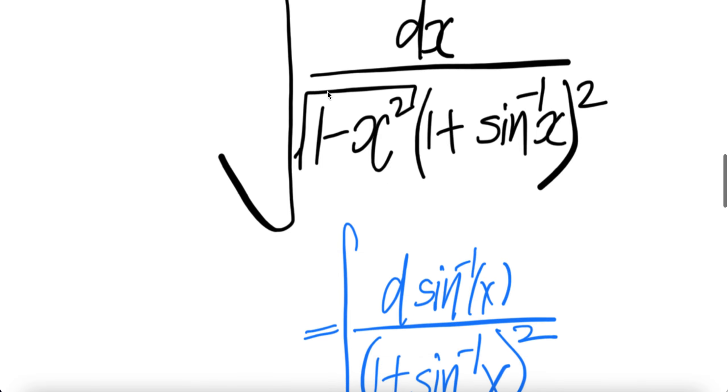Now let us push 1 over square root 1 minus x squared into dx. The derivative of arc sine x is 1 over square root 1 minus x squared dx, so this whole piece is the derivative of arc sine x.